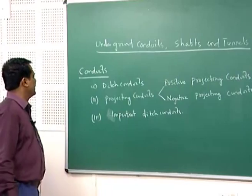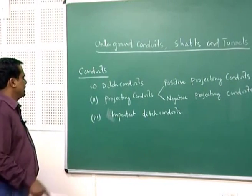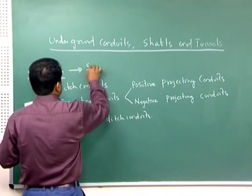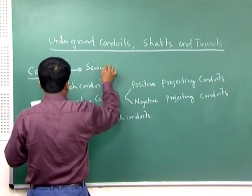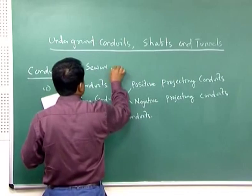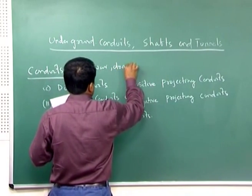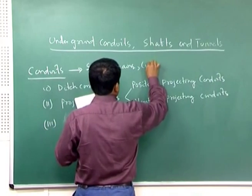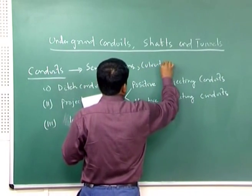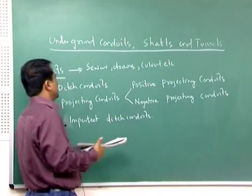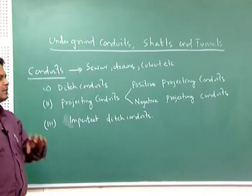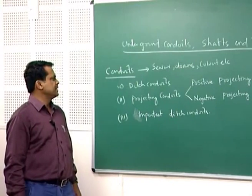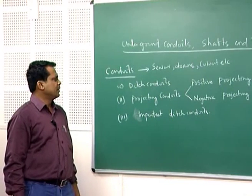What are conduits and why do we call them conduits? Conduits are basically used for sewer pipes, drains, culverts — essentially sewer pipelines, sewer lines, or drains.